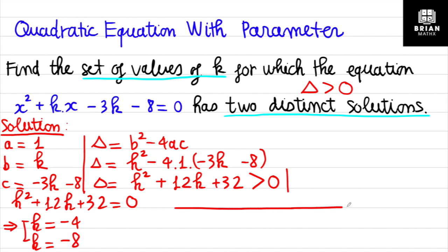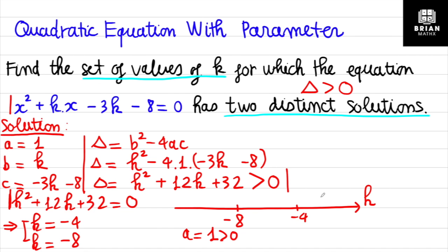Plot these two values on a number line, with k = −8 on the left and k = −4 on the right. These two values divide the number line into three regions. Since the coefficient a = 1 is positive for this quadratic, the sign pattern is: positive, negative, positive from left to right.